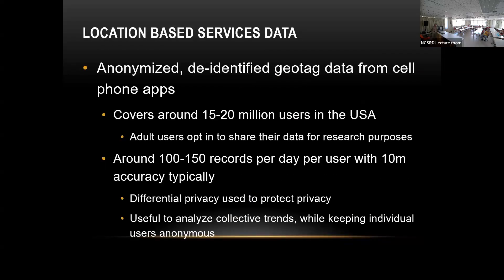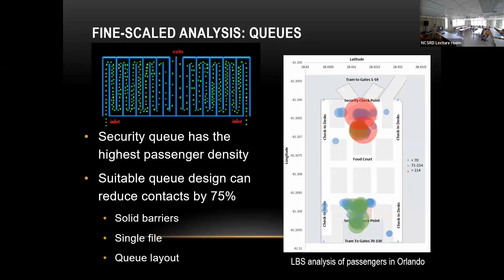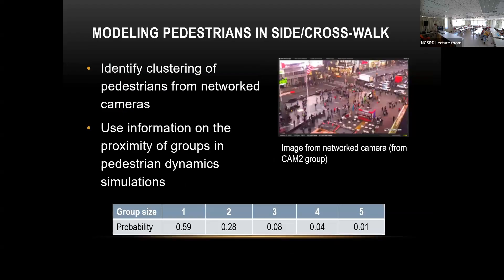With location-based services data at the Orlando airport, it identified two security checkpoints as the main thing to look at. So we modeled the security queue and found that with suitable design, you can reduce contacts by several percent — not number of infections, but number of contacts.